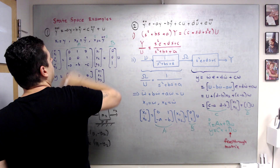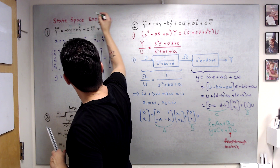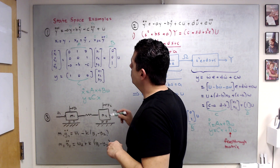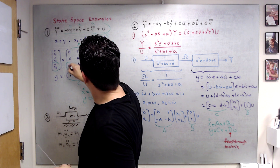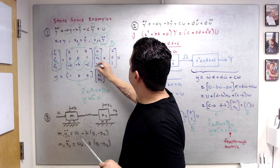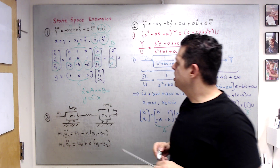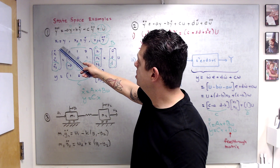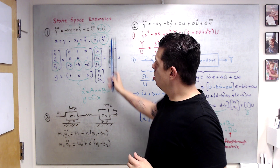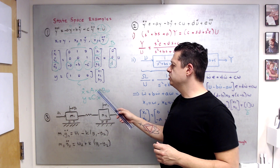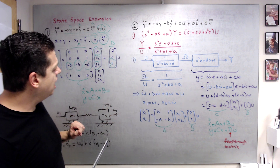Finally, x3-dot equals y-triple-dot, which is exactly this ODE: minus a·x1 minus b·x2 minus c·x3 plus u. If there were a coefficient d in front of u, only that term would change. The output is y equals x1, so we have x-dot equals A·x plus B·u and y equals C·x. Example one is done.